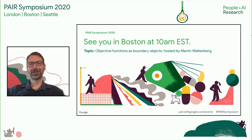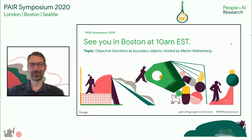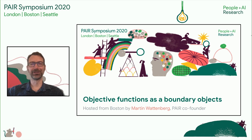Hello. Welcome to the Boston session of the PAIR symposium. I'm Martin Wattenberg. I'm a research scientist at Google and one of the co-founders of PAIR, and I'm delighted to be here today.